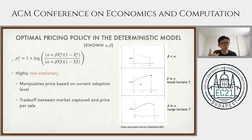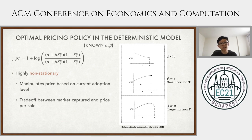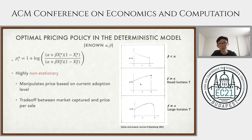Under the deterministic Bass model, assuming alpha and beta parameters are known, people have already studied the optimal strategy. The optimal price curve is shown on screen and is somewhat complicated. The main takeaway is that it's not a single optimal price but rather an optimal price curve, meaning you want to offer different prices at different times. It's a non-stationary pricing policy.